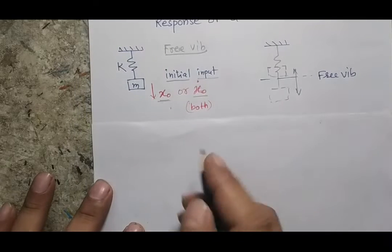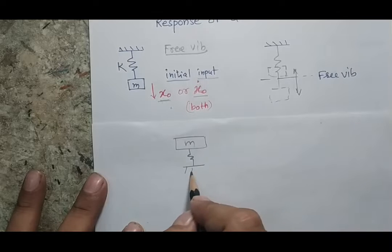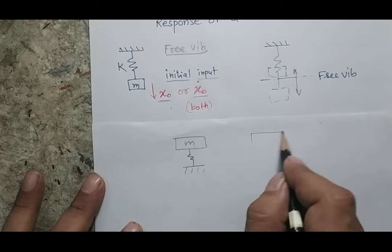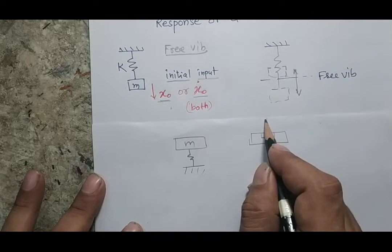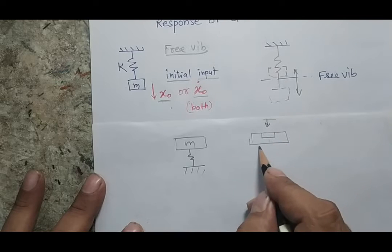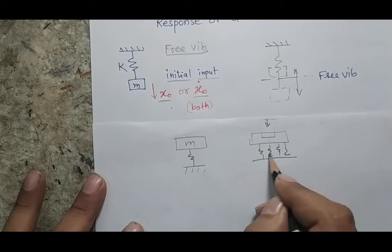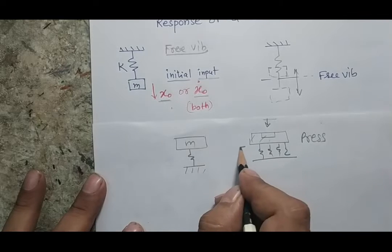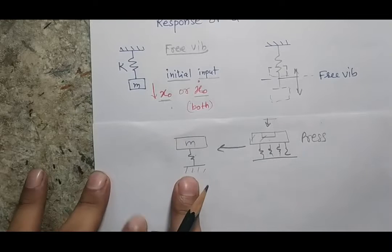How do you correlate this with a real life problem? Suppose you have a mass m on a spring. In real life, you could consider a punching press where a high amplitude force is applied to the body, and this punching press is mounted on the ground via some spring. That is your real life problem, and you move from this real life problem to a mathematical model.